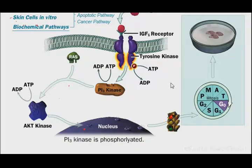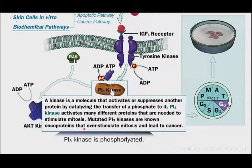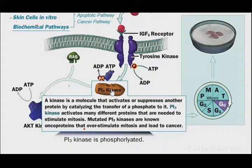PI3 kinase is then phosphorylated and activated. PI3 kinase is the molecule that activates and suppresses another protein. This means that PI3 kinase is activated, and this also creates a receptor signal.